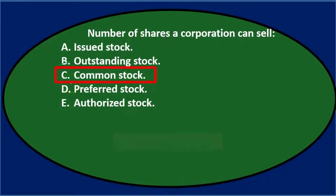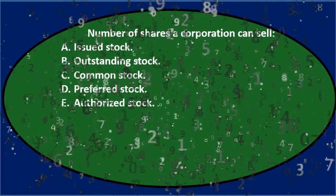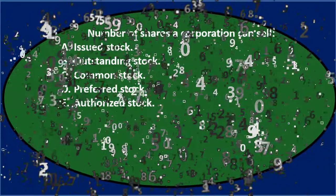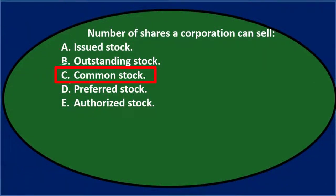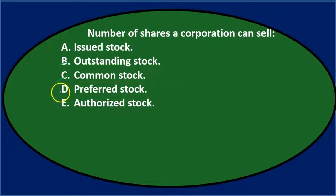Common stock is basically just a kind of stock — it doesn't tell us the number of shares that could be distributed. Option D — preferred stock: that's another type of stock. Preferred stock also doesn't tell us the number of shares by its name; it just tells us the type of stock. So we can eliminate D.